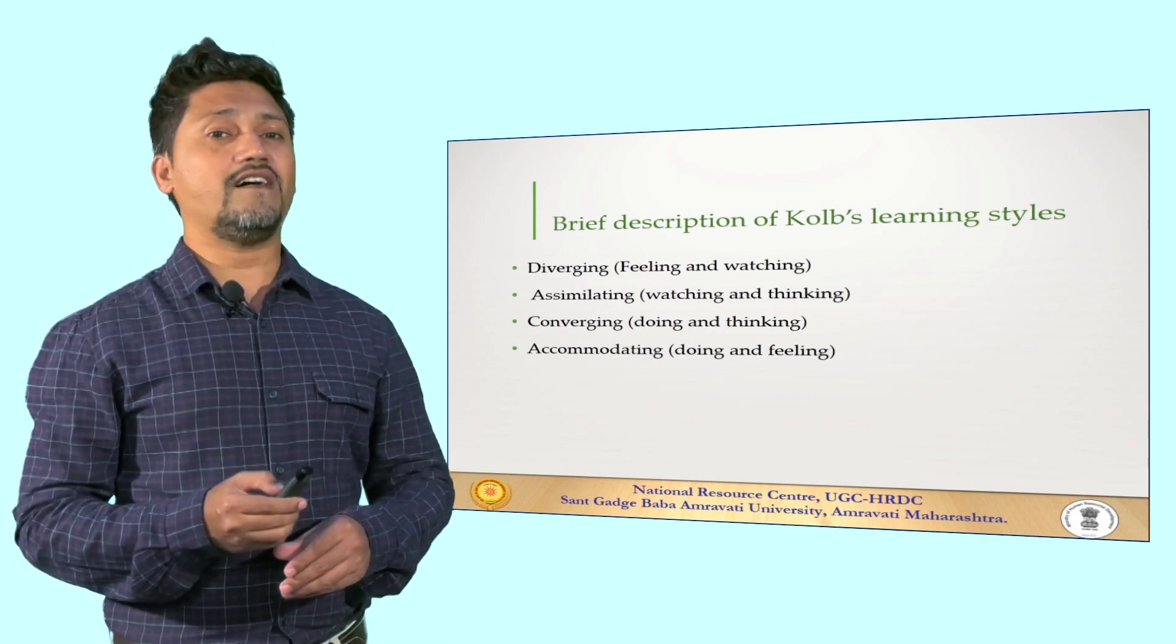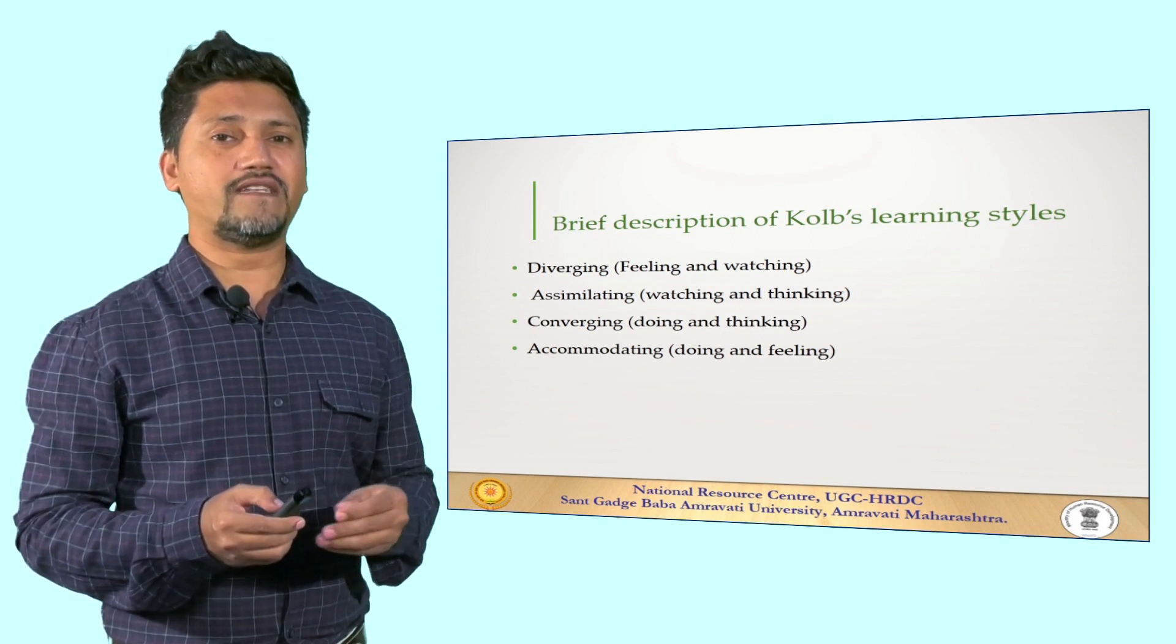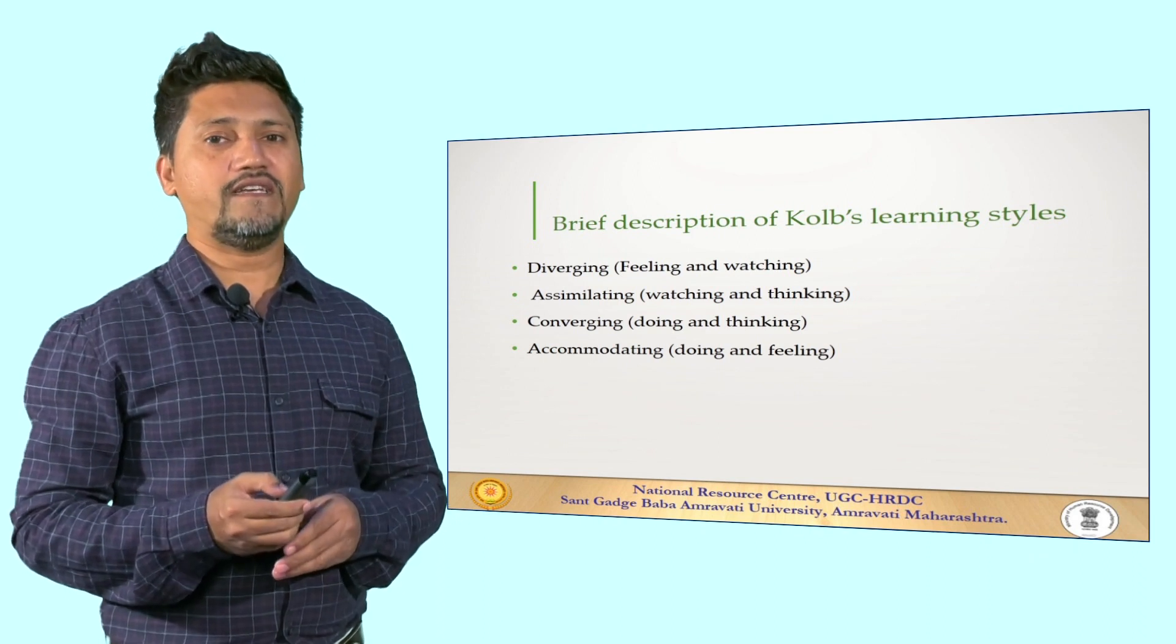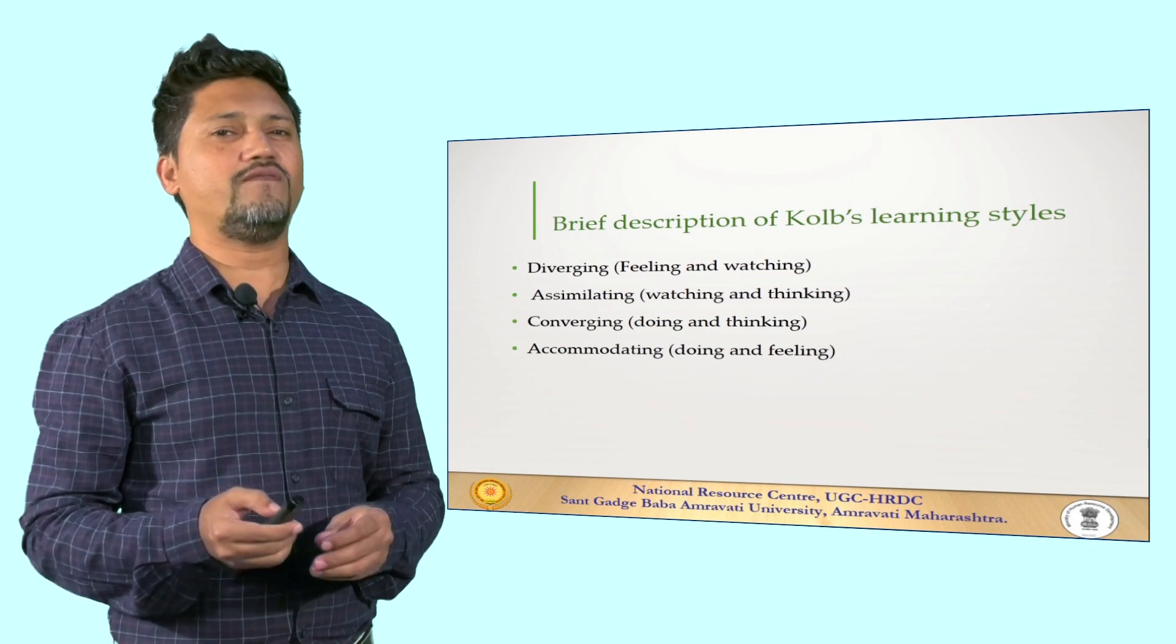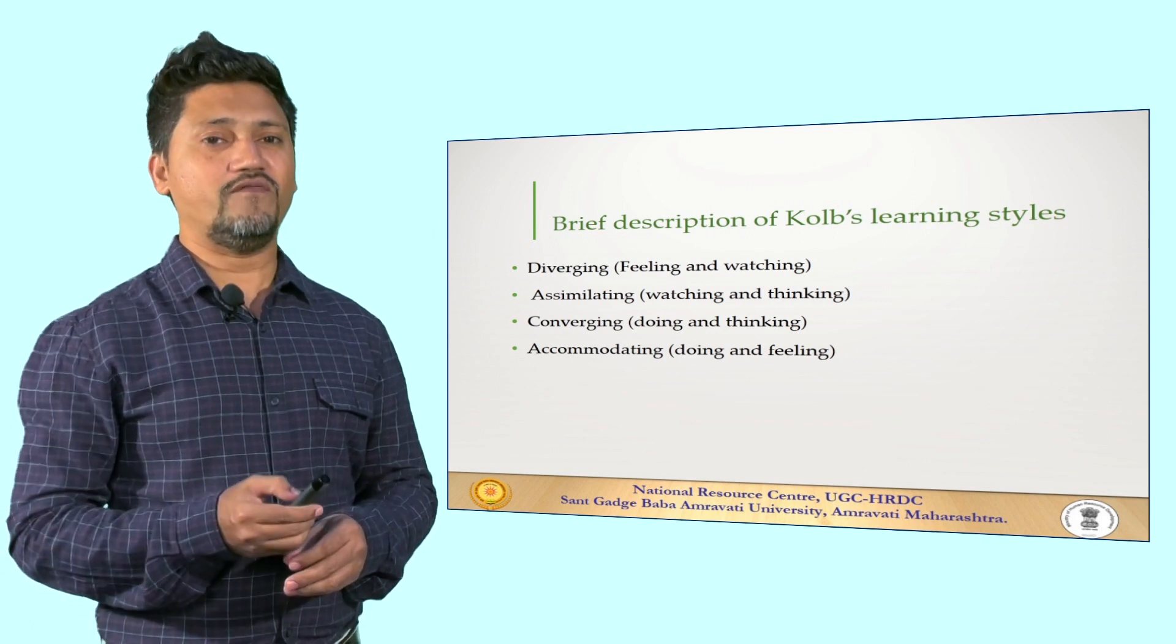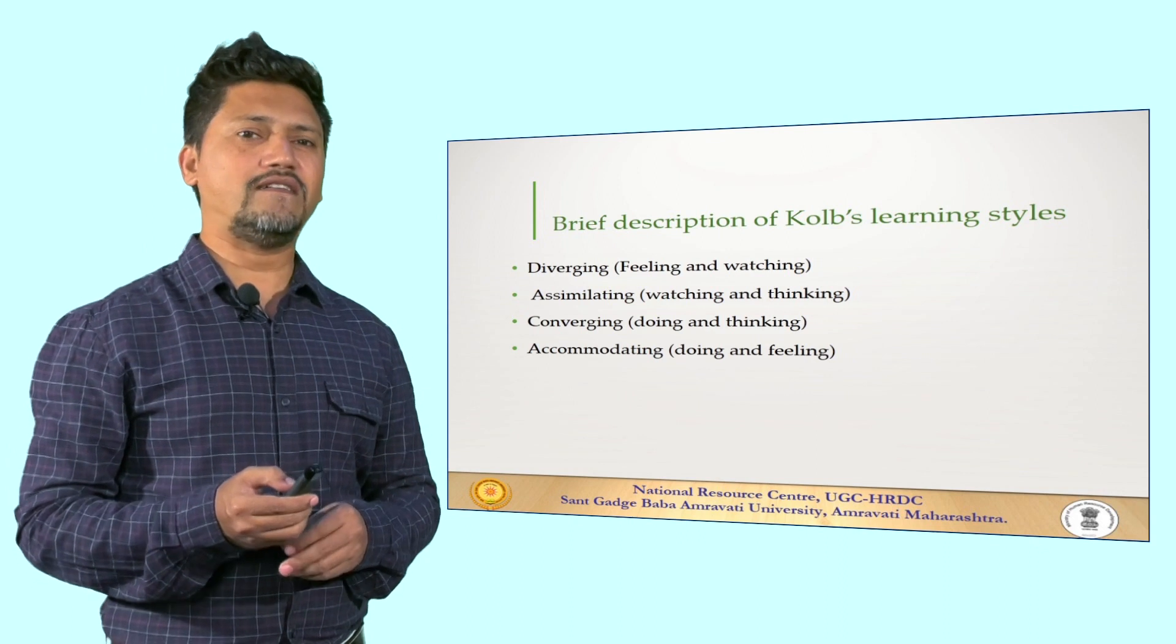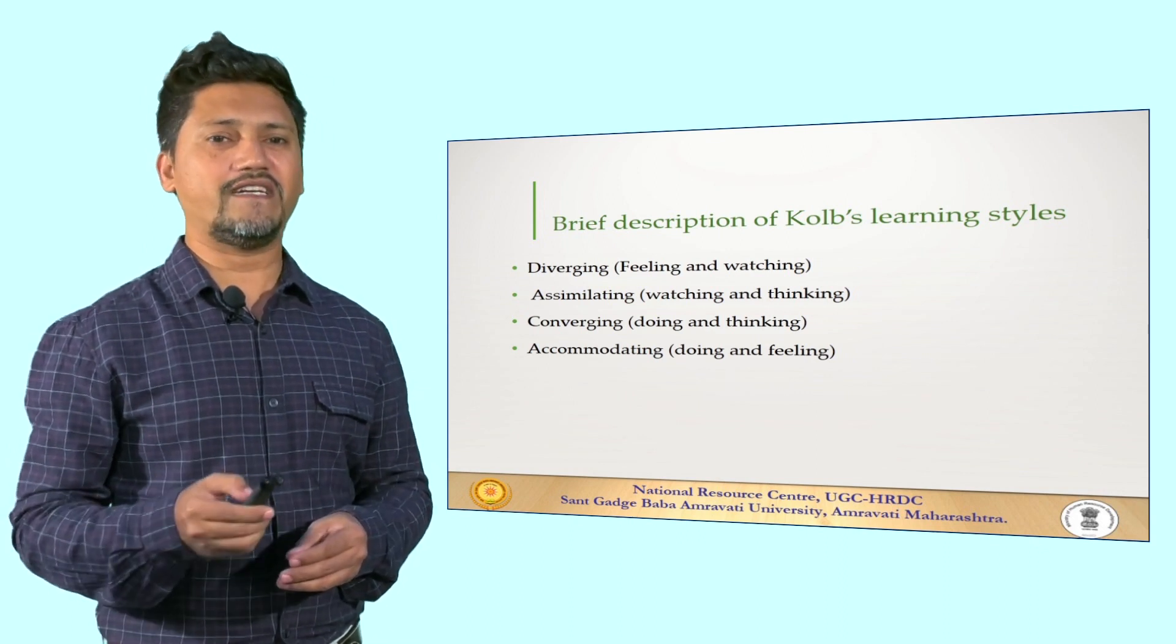Diverging learners are those who actually have their feelings and their ability to watch things included. They tend to gather information and use imagination to solve problems. They are best at viewing concrete situations from several different viewpoints. Then there is the assimilating category where learners are more interested in watching things and thinking about things.